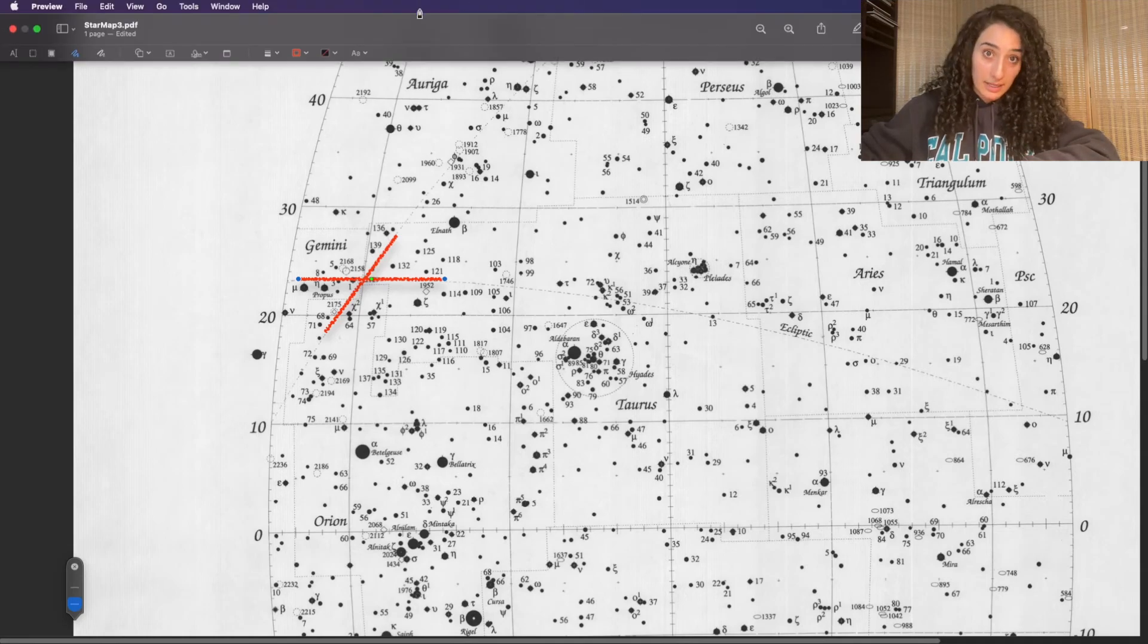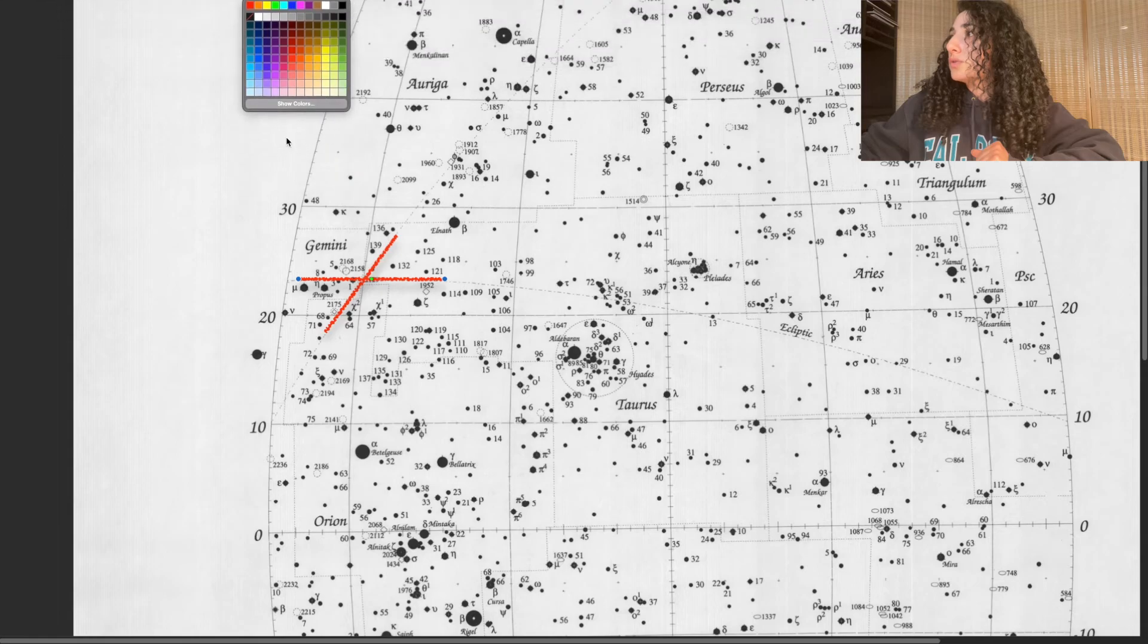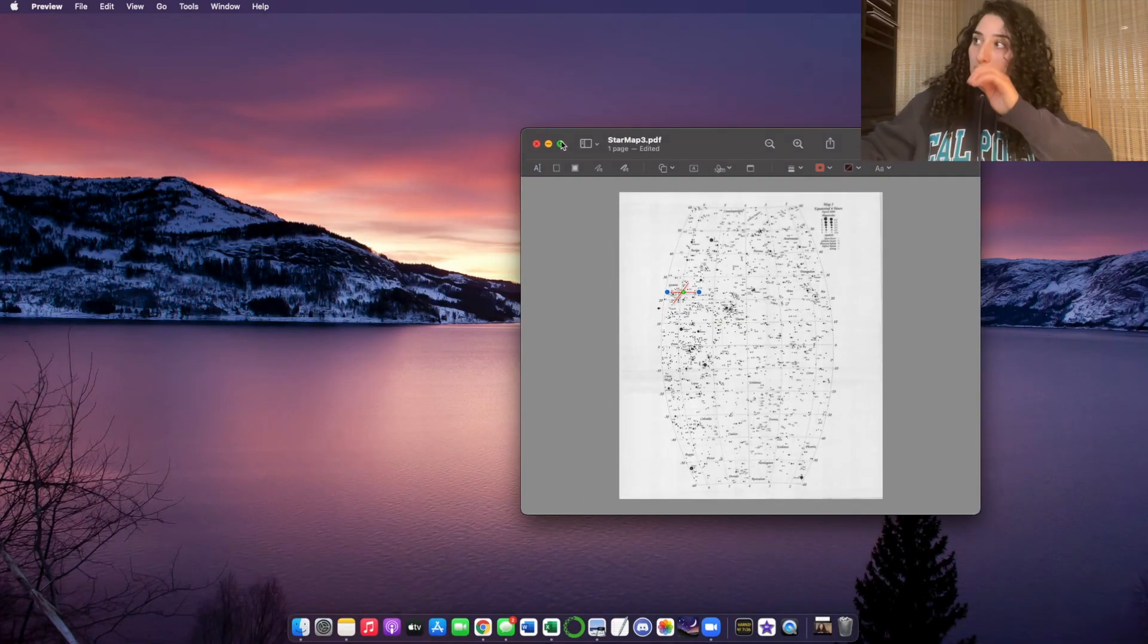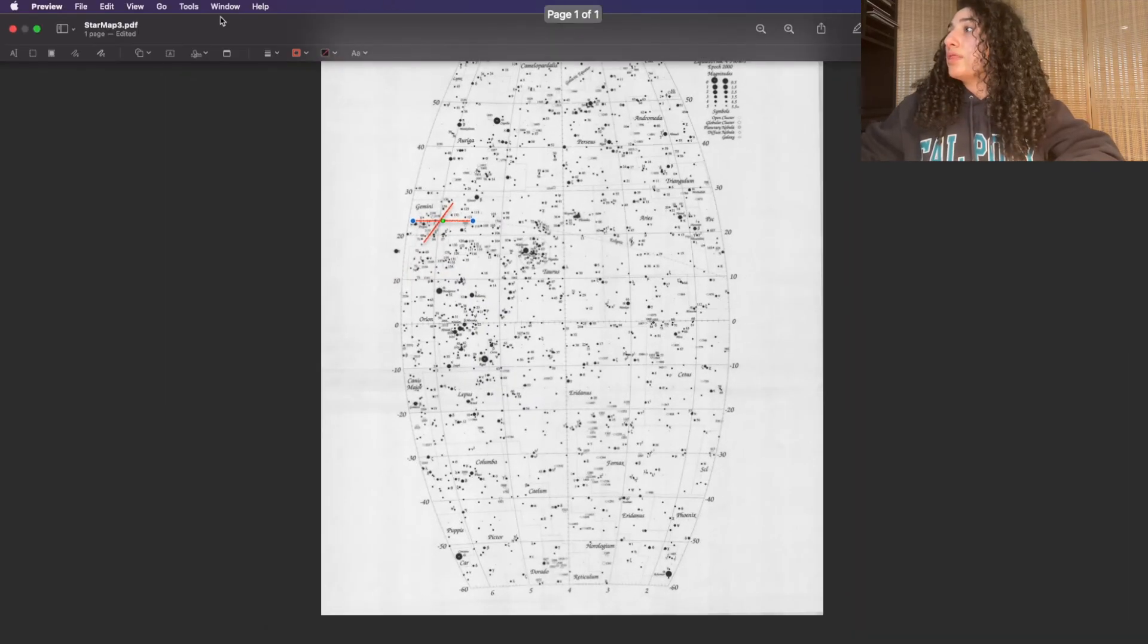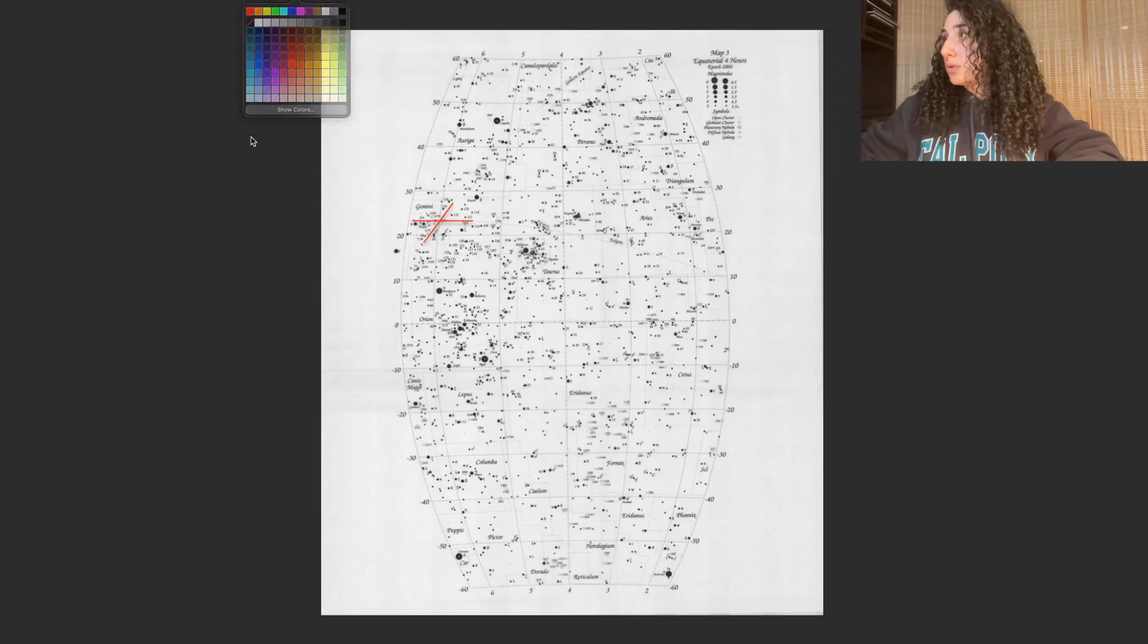So I can go ahead and outline the boundary of Taurus, and it'll make it a lot easier for us to actually see that this constellation does cross. I'm sorry, the galactic equator does cross the ecliptic in the constellation of Taurus.